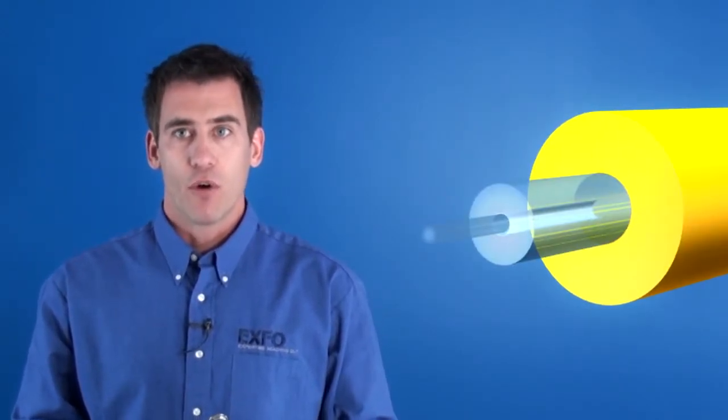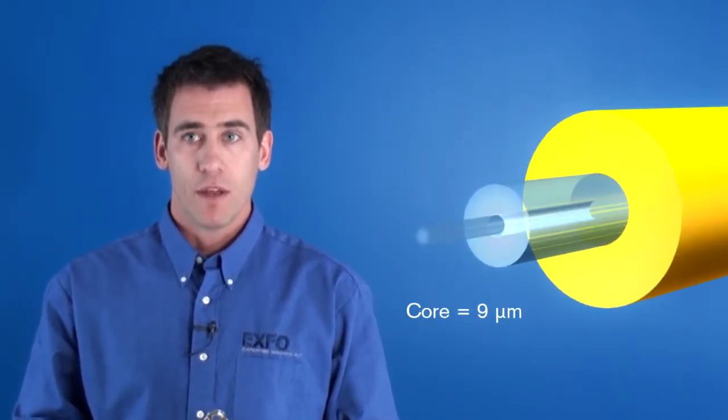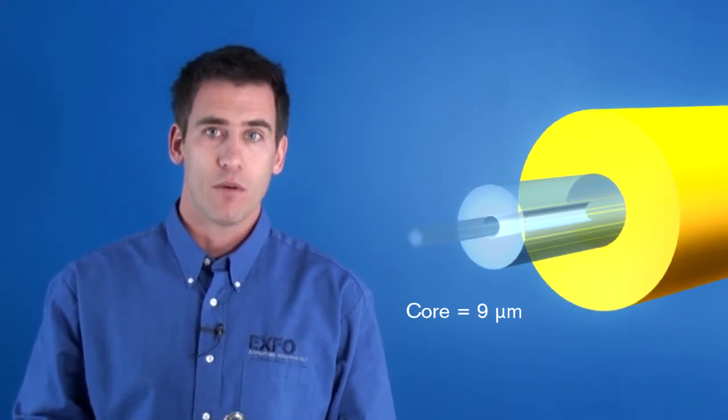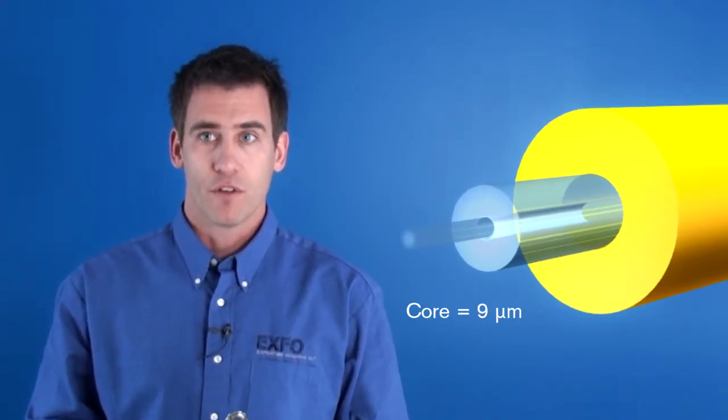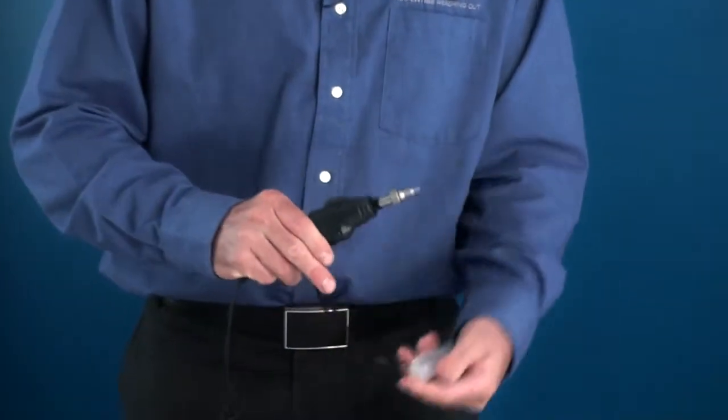Keeping in mind that the fiber core is only 9 microns in diameter and that defect as small as 1 micron can affect the performance of connectors, using a high-resolution inspection probe like the FIP400 is crucial.